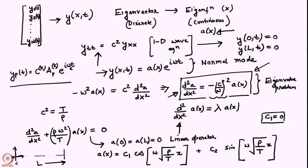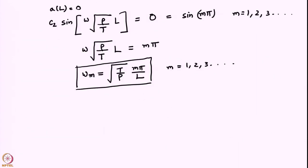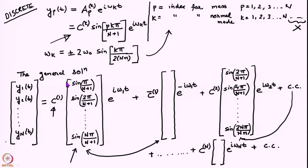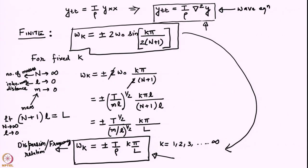We satisfied the zero displacement boundary condition at the left boundary, which caused the cosine term to drop out. We also satisfied the zero displacement condition A of L equal to 0 on the right side, which caused the frequencies to be only certain discrete multiples of square root of T by rho into pi by L. By taking the limit of the finite frequency relation with N going to 0 and small l going to 0, we recovered this result.